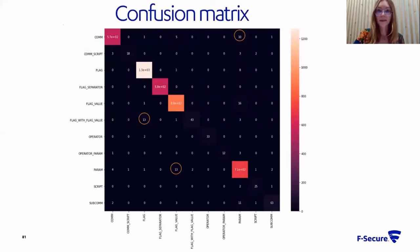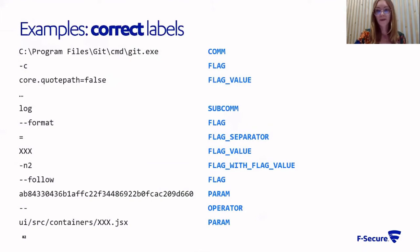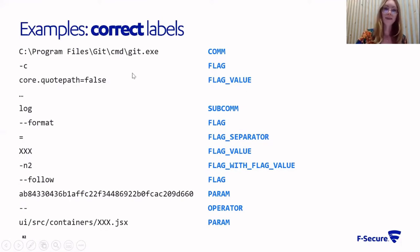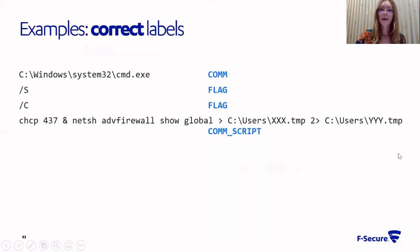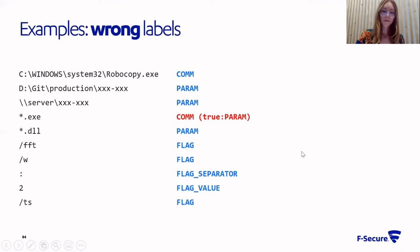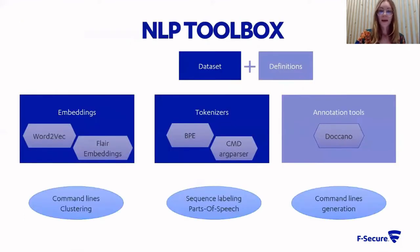Looking at the confusion matrix, we observed some expected errors. Some tags are definitely harder — even hard for us to assign labels to — and the model of course struggles with these too. The model struggled with detecting 'script,' which is an entity of another language, and also with 'flag value,' because sometimes there is no separator between the option and the value assigned to it. Just a few examples of how it works: on the left is the word split, on the right the assigned tags. One correctly tagged git command, and here a correctly recognized command script — another command line inside a command line. A mistake occurs where the model thought something ending in 'exit' was an executable command, but it was actually a parameter for Robocopy.